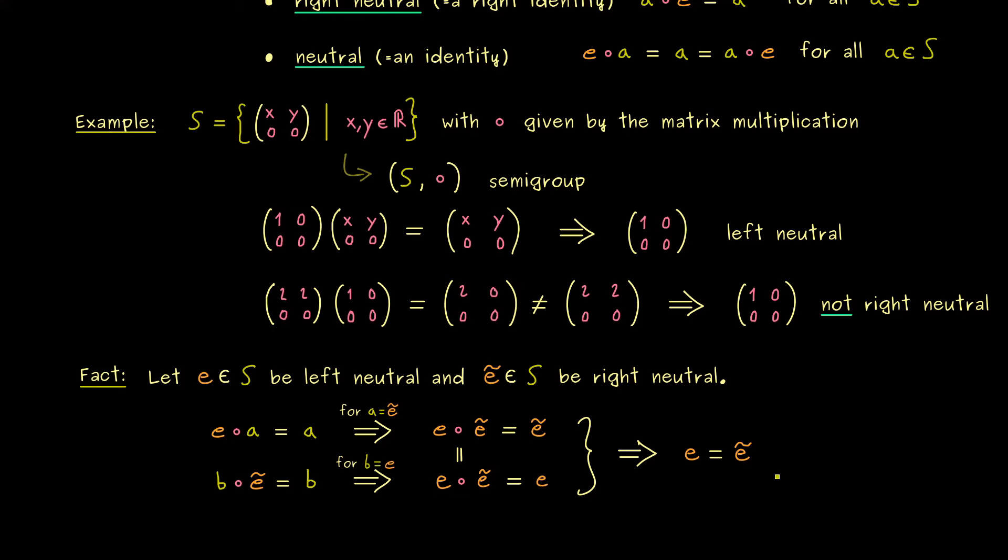This is important because it immediately tells us two things. First if we have a left neutral and a right neutral element we get a neutral element. And second this identity is unique, there is no other identity element in S. So please remember that in a semi-group there can be at most one neutral element.